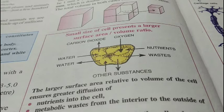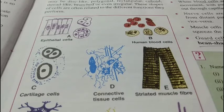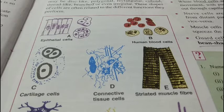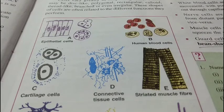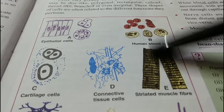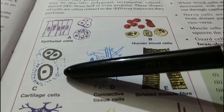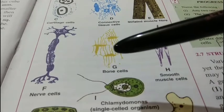Here are different figures showing the various kinds of cells according to their shape. The epithelial cells are rectangular or cylindrical in shape. Human blood cells are disc-like, and cartilage cells are ovoid in shape.